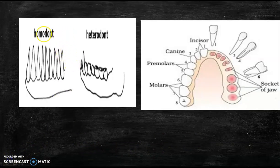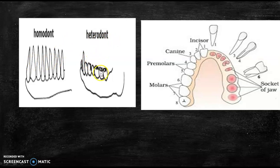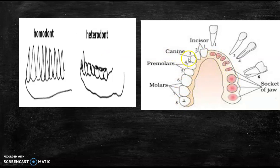Here you can see the image of homodont and heterodont. Homodont means all the teeth are similar in structure, whereas in heterodont they differ in their structure. Most animals have a homodont structure, whereas humans and other higher animals contain heterodont dentition. These are the different types of teeth: molars, premolars, canines and incisors — all embedded in a socket of the jaw.